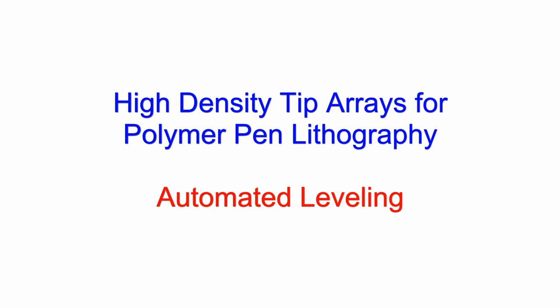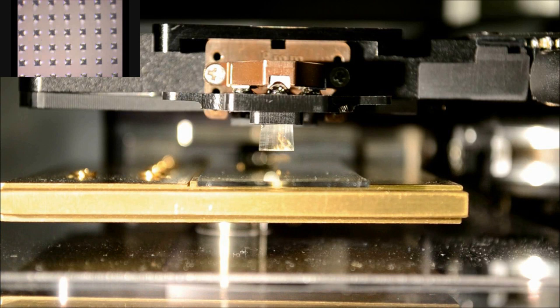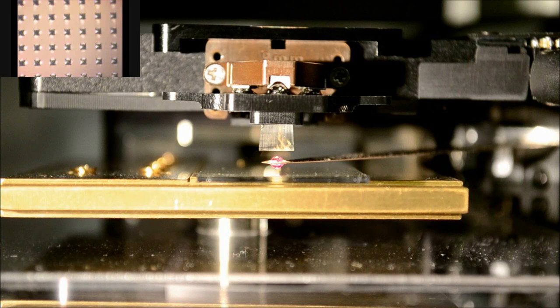This nanolithography is being done with NanoInk's NLP2000 light manufacturing and research machine. NanoInk's automated leveling technology is being used to level the HD or high-density tip array to the surface below.